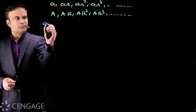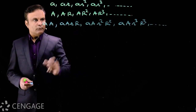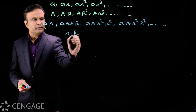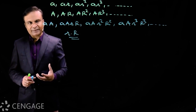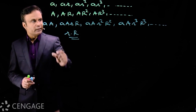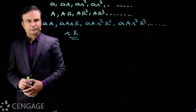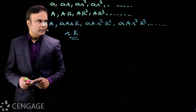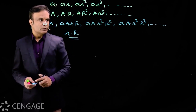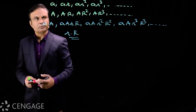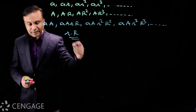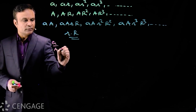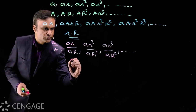If we multiply the corresponding terms of two geometric progressions, the resulting progression is also a GP with common ratio r·R. Similarly, if we take the ratio of corresponding terms of the two GPs, the resulting progression is also a geometric progression with common ratio r/R.